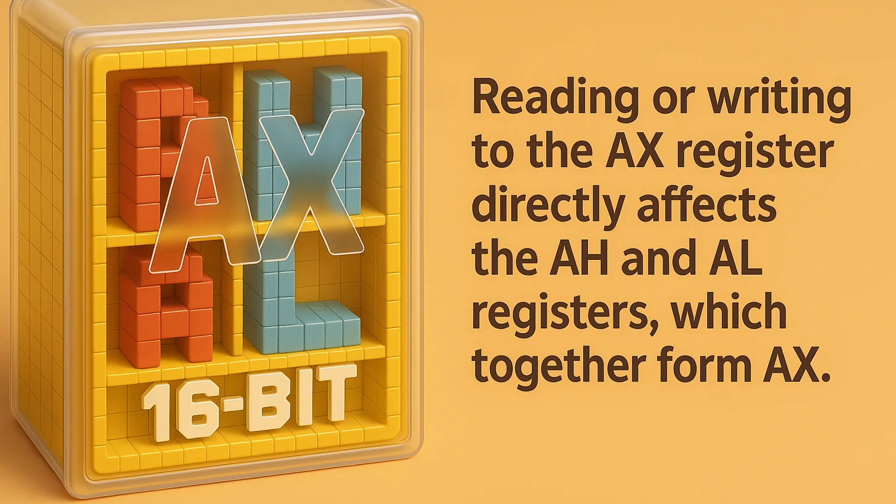The AX register is essentially a pointer to the AH and AL registers, allowing them to both be addressed as 16 bits. For example, if the AH and AL registers both hold hexadecimal FF, consuming their full 8 bits, and you set the AX register to 0, then both AH and AL will now equal 0, as any access to the AX register affects both the AH and AL registers. Likewise, if you read from the AX register, you read AH and AL together as a 16-bit value, where AH would be the upper 8 bits and AL would be the lower 8 bits.